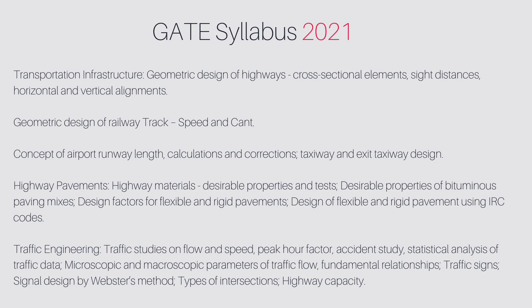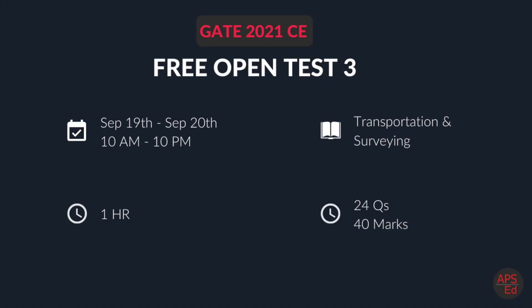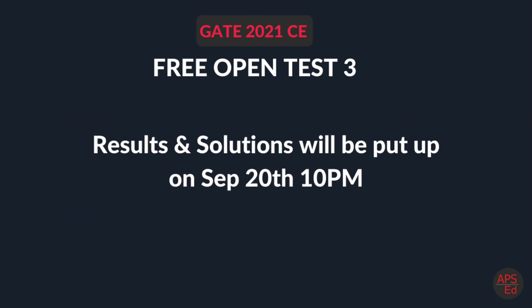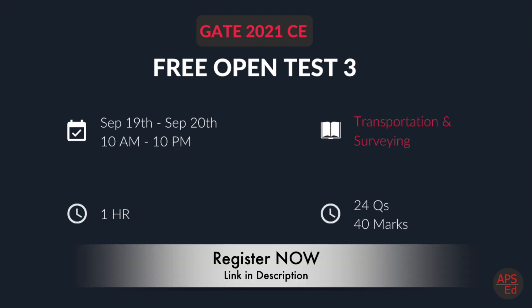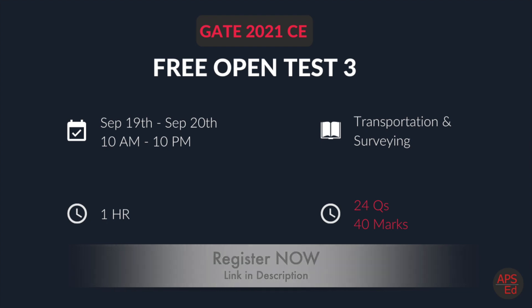There is a particular test window to attempt the test — a 36-hour test window. You have to come live between September 19th and 20th, from 10 AM to 10 PM, and you can only attempt the test within this 36-hour window. The results will be put up on September 20th at 10 PM. After that, you can check the results, and solutions will also be available for five more days — but only if you attempt the test within the 36-hour window.